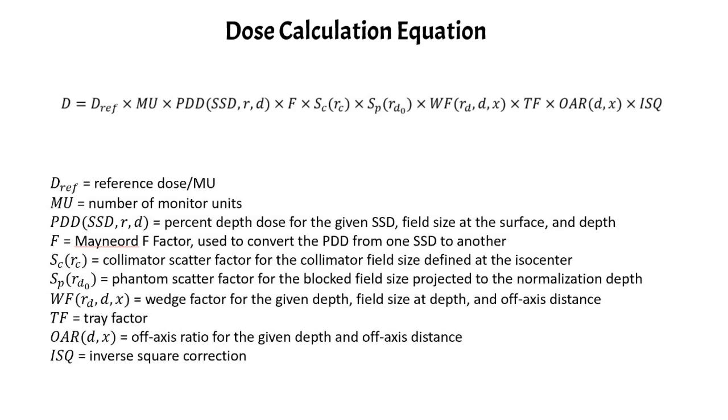F is your Maynard F-factor, which is used to convert the PDD from one SSD to another. This is usually equal to one if your setup SSD is equal to the same SSD that was used to measure the PDD.